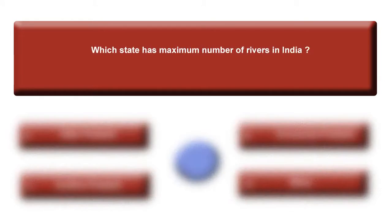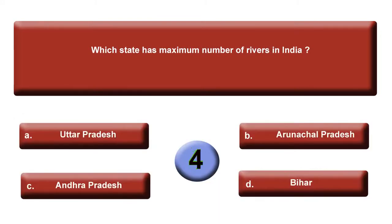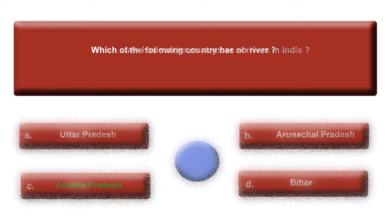Which state has the maximum number of rivers in India? Your options are: option A, Uttar Pradesh; B, Arunachal Pradesh; C, Andhra Pradesh; or option D, Bihar. Time is up. Your correct answer is C, Andhra Pradesh.